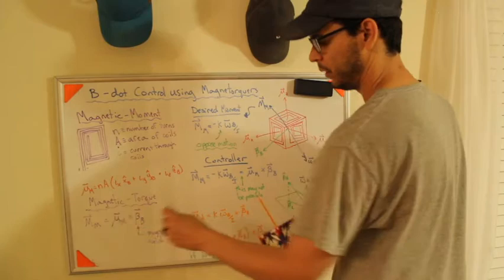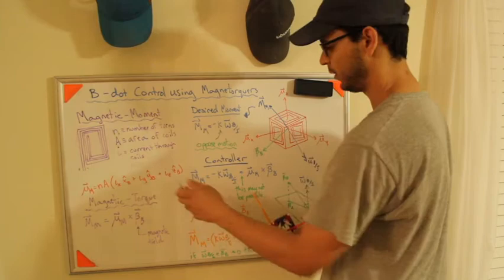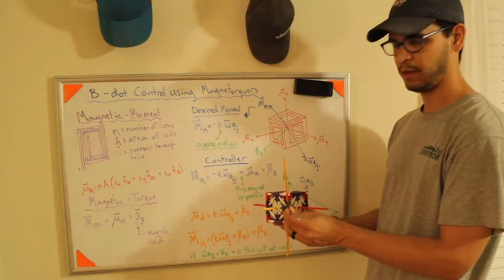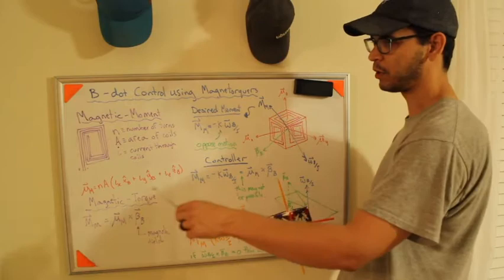This is something that, this is my control input. I can make these currents anything. If I made this, say, one amp and these zero, my magnetic moment would be along the X axis. If I made this one amp and this one amp, well then my magnetic moment would be here, which would be offset from there. And so I can put that magnetic moment anywhere.